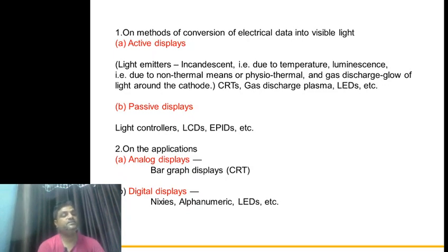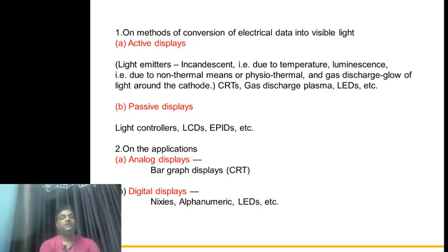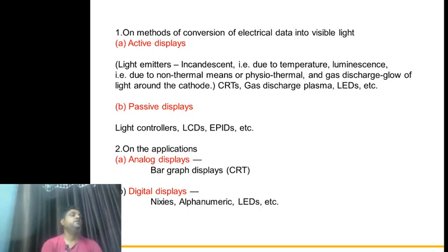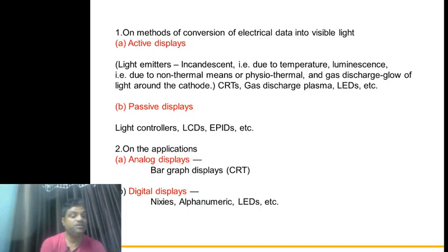If we classify displays based on application, there are analog displays and digital displays. In analog displays, we have the bar graph display and CRT. In the laboratory, we use the CRO, which is basically an analog device. Digital storage oscilloscopes have digital displays. Digital displays include alphanumeric, nixie tube, LED, and others.